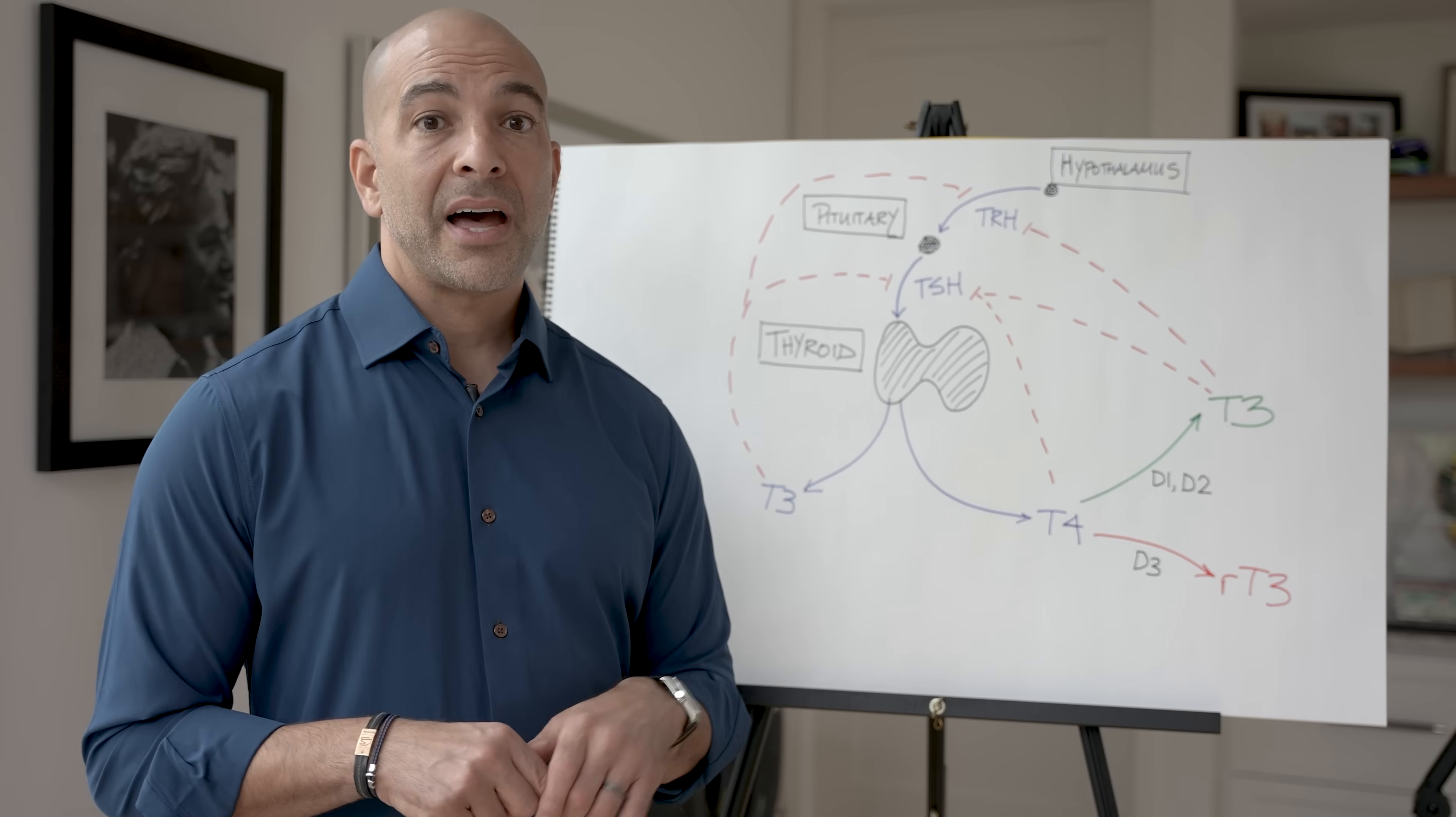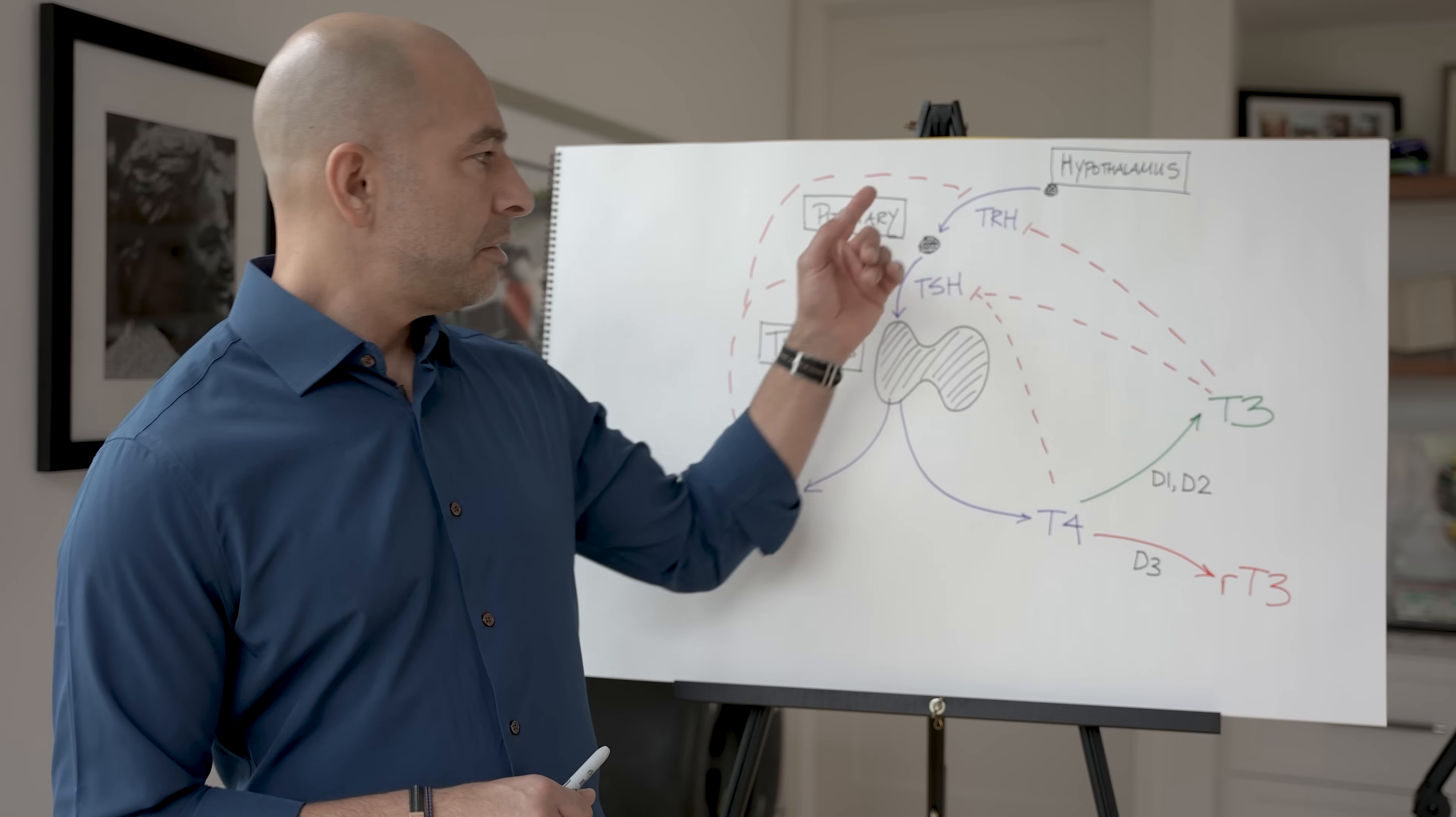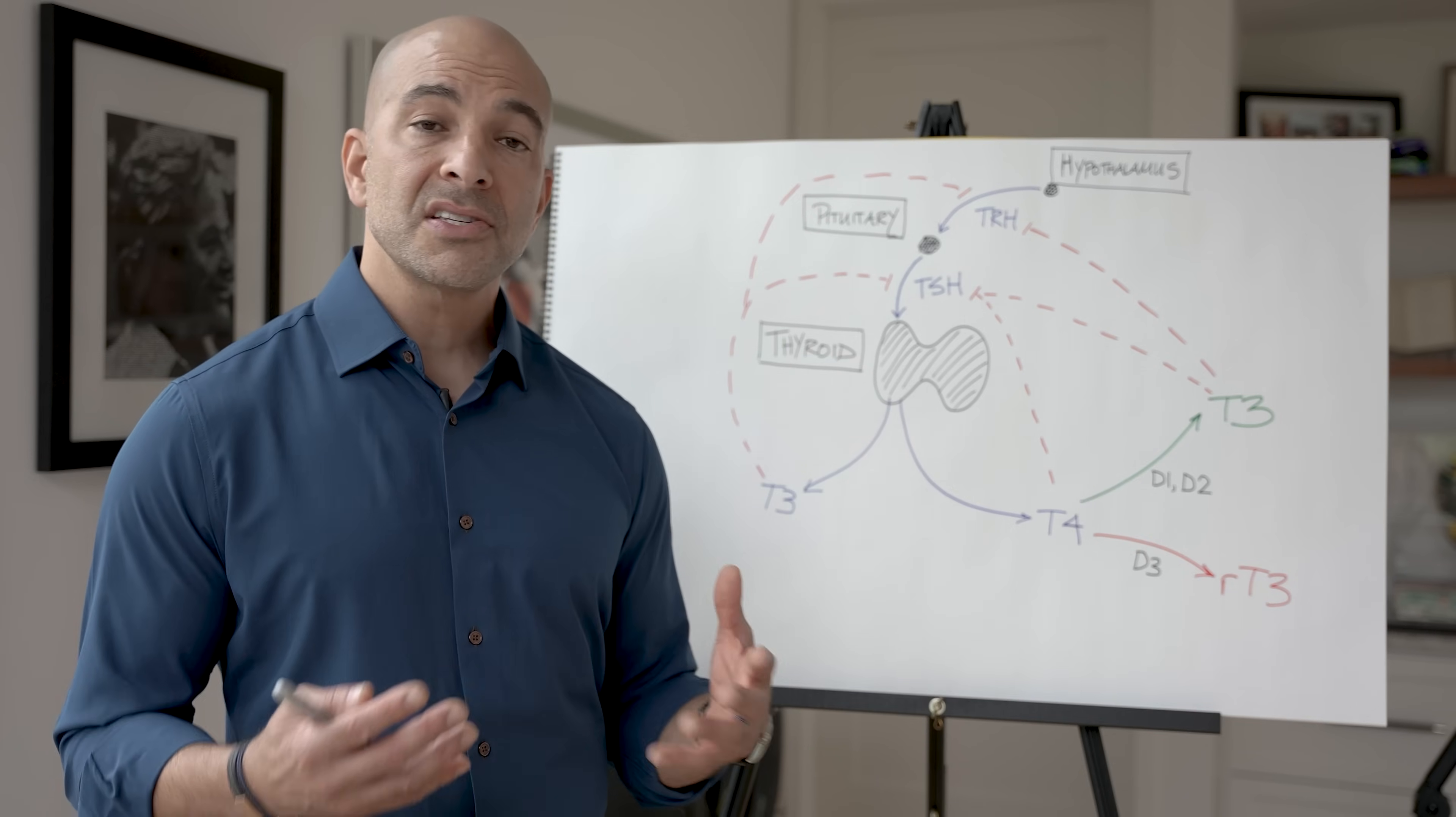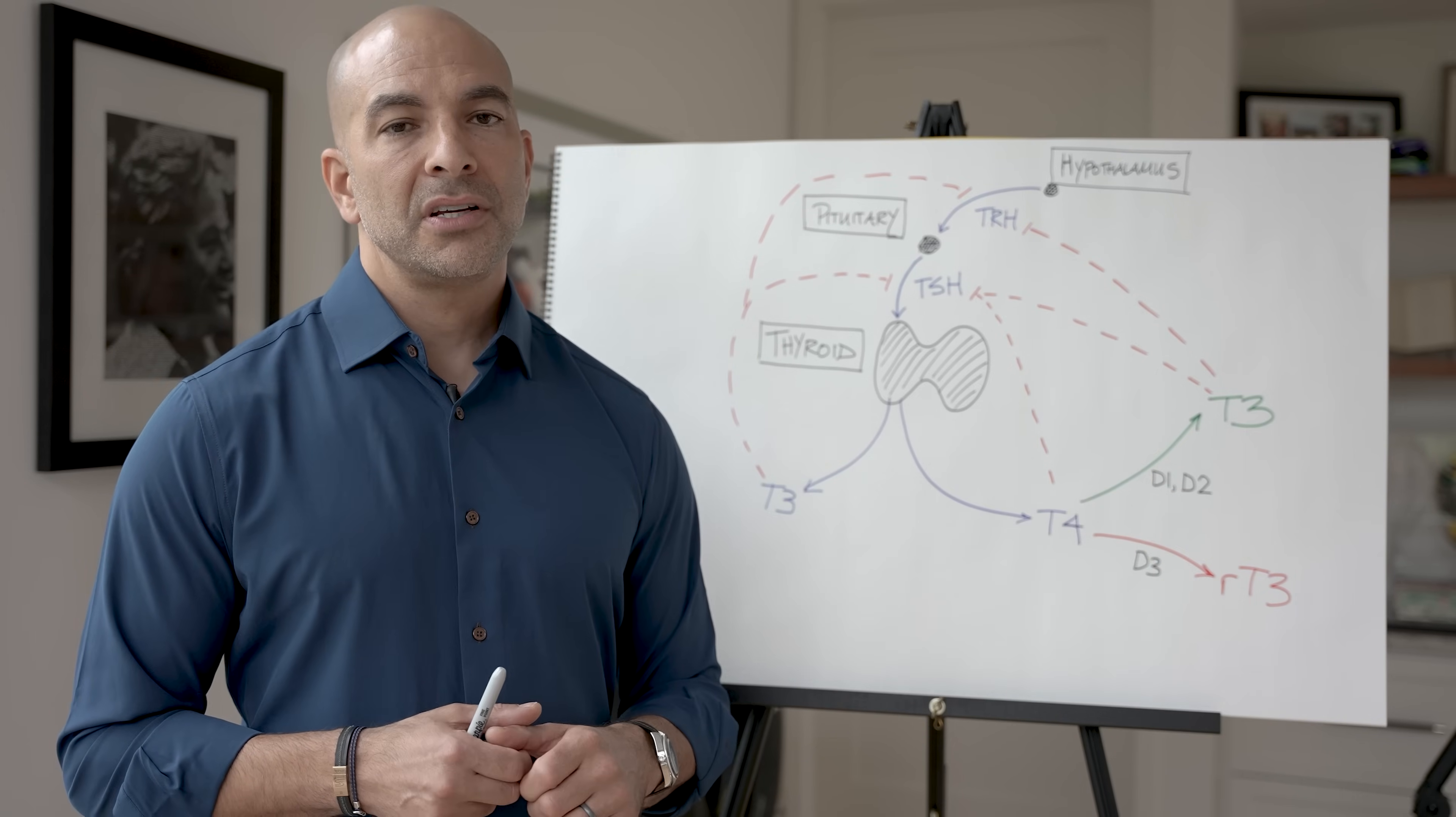I prefer to order not just the TSH, but the free T4, the free T3, and the reverse T3 if I have any concerns about hypothyroidism. I don't always order this blood test. So if the TSH is normal, the T3, T4 are normal, and the patient is asymptomatic, I'm not looking at their reverse T3. But if a patient has symptoms and you need to investigate them, I think you have to understand all of these. And what you're basically doing is using the amounts of T4 or free T4, T3 or free T3, reverse T3 to impute what the action is of these diodinases, and therefore what your treatment strategy needs to be.